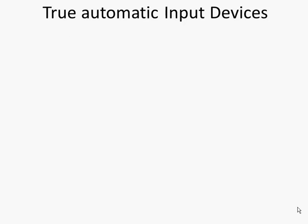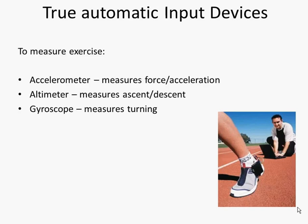We said that you would have to suggest input devices for a given scenario. So imagine a scenario where somebody wanted to measure the performance of a sprinter or runner — these might be the types of input devices you would suggest. The exam board might expect you to know about some specialist types of input and output devices, so it will be worthwhile reading around this subject as much as you can.